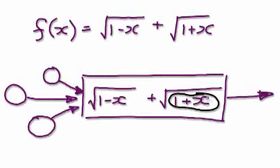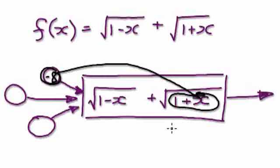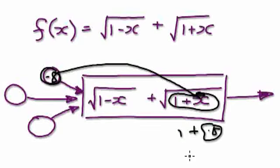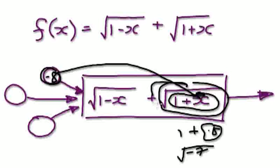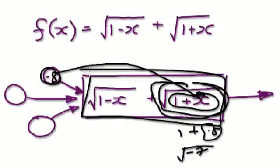Same with this one here. If you make this a negative number — let's say if you put x equal to negative 8 into here — then it will be 1 plus negative 8, which is negative 7. So it's like you're square rooting a negative 7. This bit here will break down, and then if this bit breaks down, the whole machine breaks down.